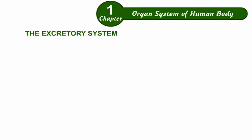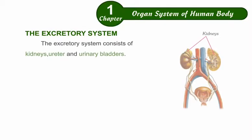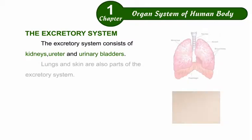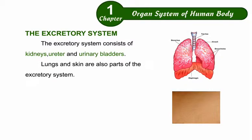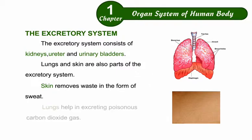The excretory system consists of kidneys, ureter, and urinary bladder. Lungs and skin are also parts of the excretory system. Skin removes waste in the form of sweat, and lungs help in excreting waste gases.